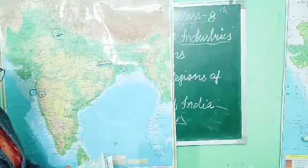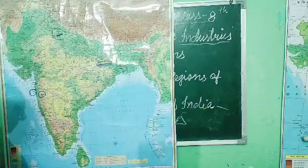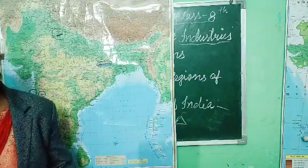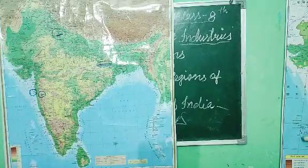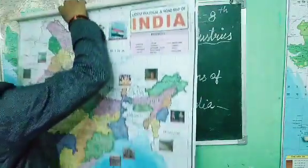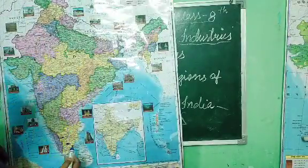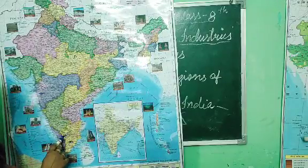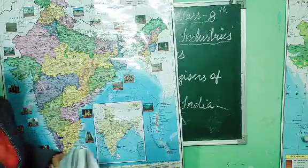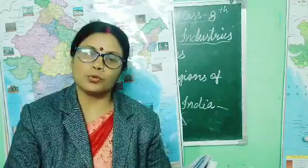Next is the Madurai-Coimbatore industrial region in the south. And also Ahmedabad-Baroda industrial region in Gujarat. These two industrial areas are in Gujarat.